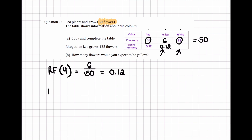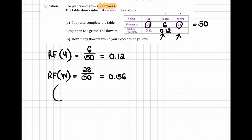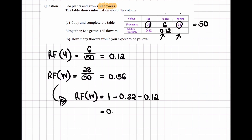For the relative frequency of white, I'll show you two different methods. Method one: 28 flowers are white out of the 50 flowers in total, so that gives a relative frequency of 0.56. Alternatively, for method two, the relative frequency of white equals total probability 1, minus the frequency of red (0.32), minus the frequency of yellow (0.12), which still gives us 0.56.